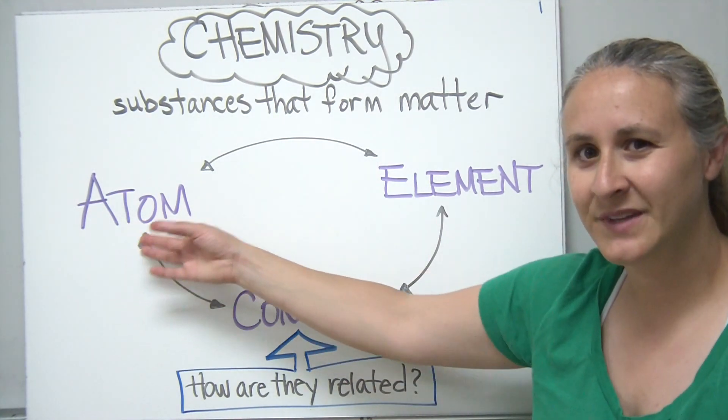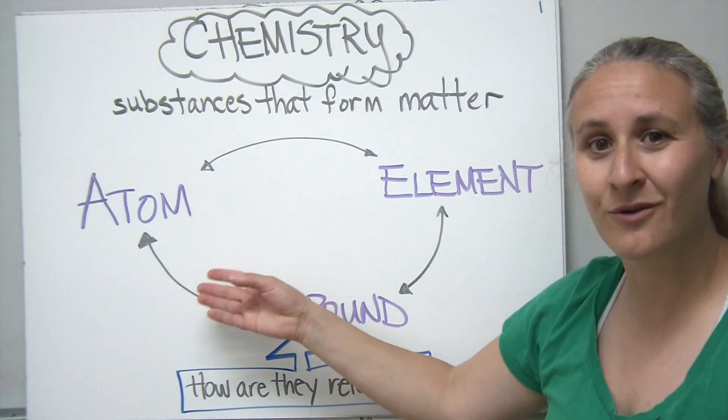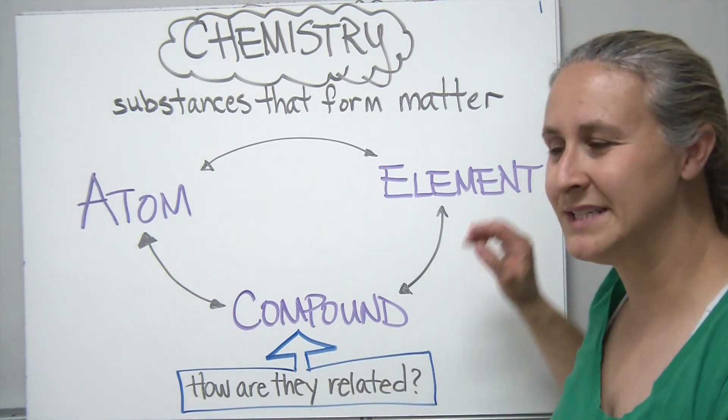The first term is the atom and how it relates to an element and how they relate to compounds. They're all interconnected with each other, but how are they really related? We'll get into a little of the details today.